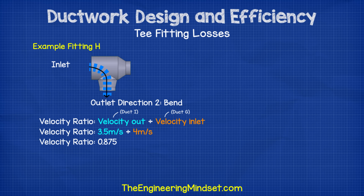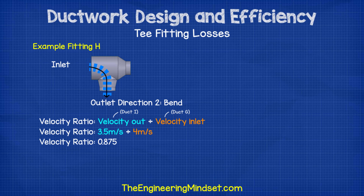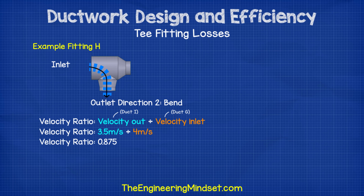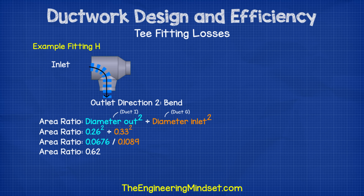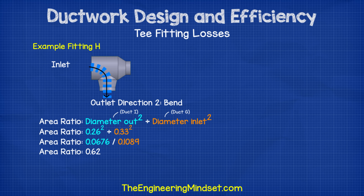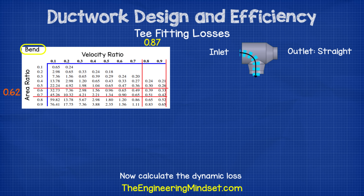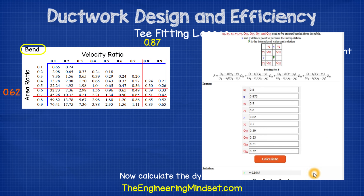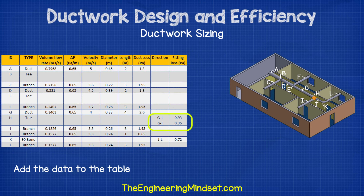Then we can calculate the dynamic loss for the air which turns into the branch. For this, we use the same formulas — velocity out divided by velocity in to find the velocity ratio. We use 3.5 meters per second divided by 4 meters per second to get 0.875. Then we find the area ratio using diameter out squared divided by diameter in squared — 0.26 meters squared divided by 0.33 meters squared to get 0.62. Then we use the bend table for the T section. Again, it's between the values listed in the table, so we use bilinear interpolation, dropping the values in to get the answer of 0.3645 pascals.